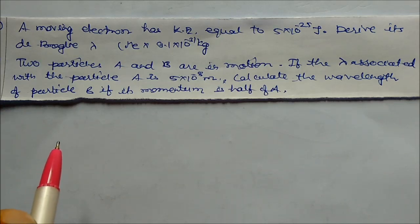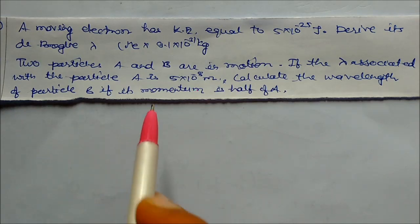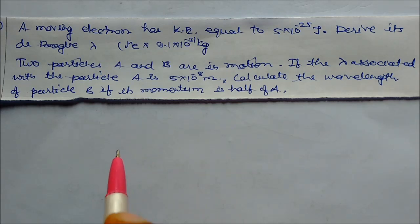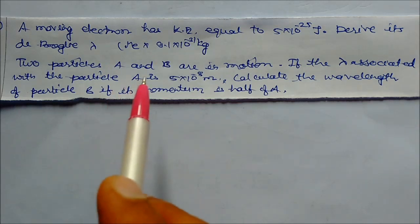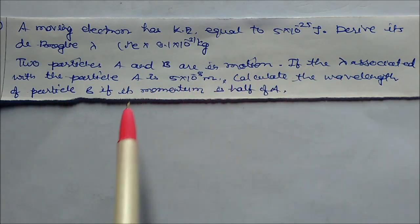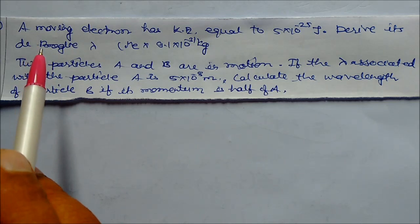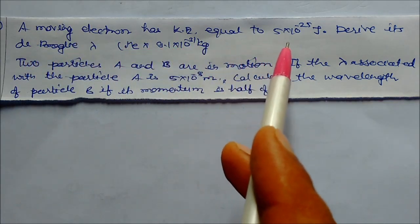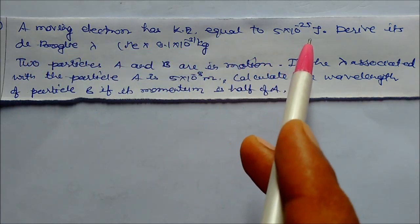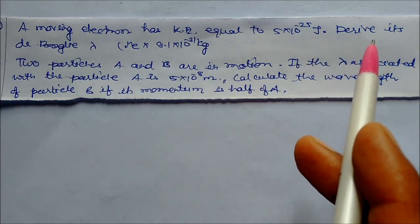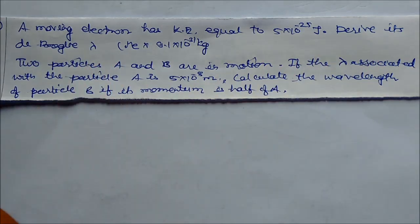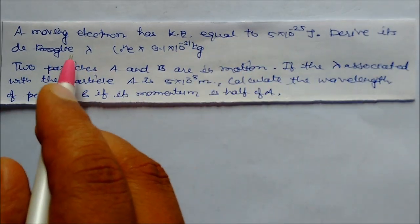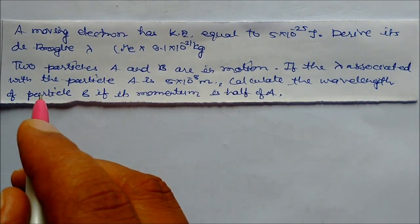We have solved some problems based on de Broglie wavelength, where lambda is equal to h by mv. Today we have collected some problems. Our first problem: a moving electron has kinetic energy equal to 5×10⁻²⁵ joule. We need to derive its de Broglie wavelength. The kinetic energy is given, so we have to derive the de Broglie wavelength.